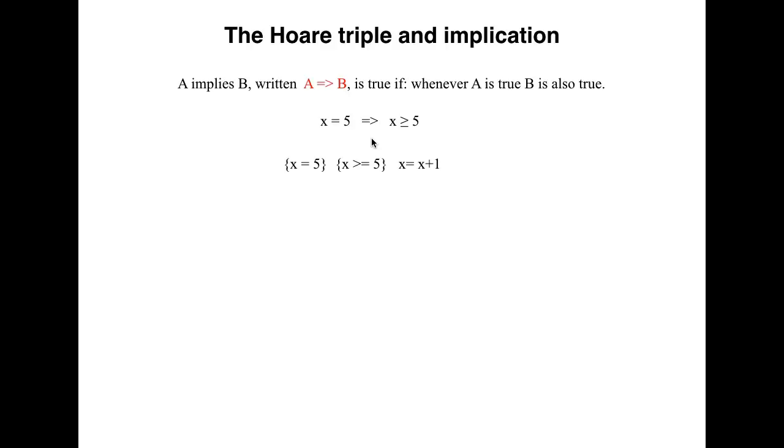When we write two assertions in a row, we mean that the first implies the second. This may seem silly, but there are real cases where such situations arise. And in such situations, we have to show that the first assertion implies the second. In this case, it's obvious.